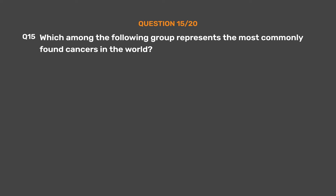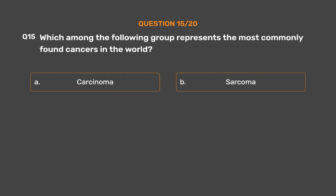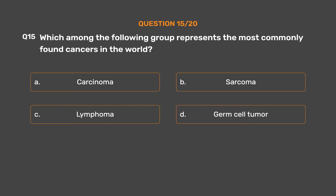Question No. 15. Which among the following group represents the most commonly found cancers in the world? Option A: Carcinoma. Option B: Sarcoma. Option C: Lymphoma. Option D: Germ cell tumor. The correct answer is Option A: Carcinoma.